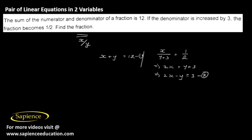Now we have two equations and two variables. We can solve them for the values of x and y. Let us add them to eliminate the y variable. x + 2x is 3x, y - y is 0, equal to 12 + 3, which is 15.